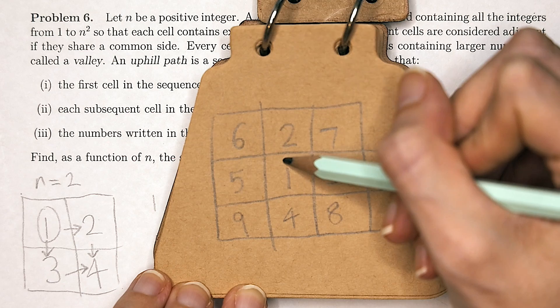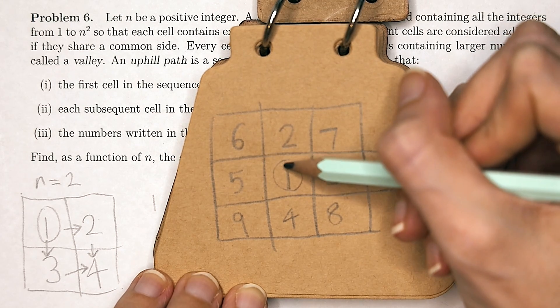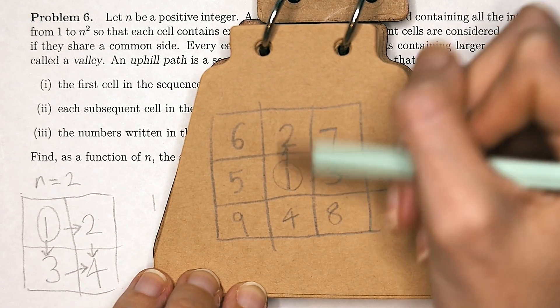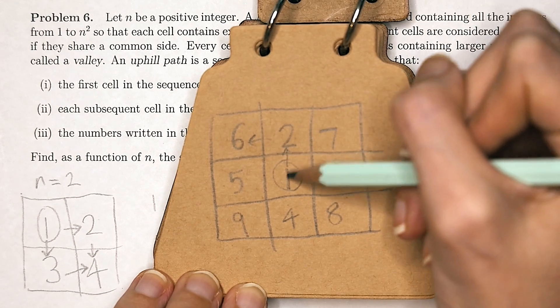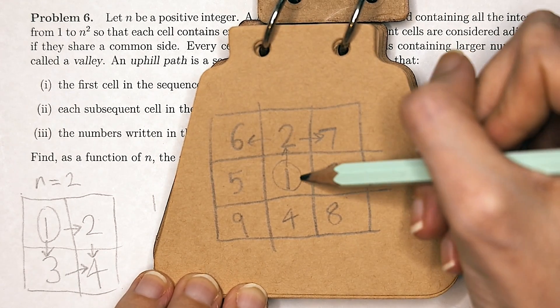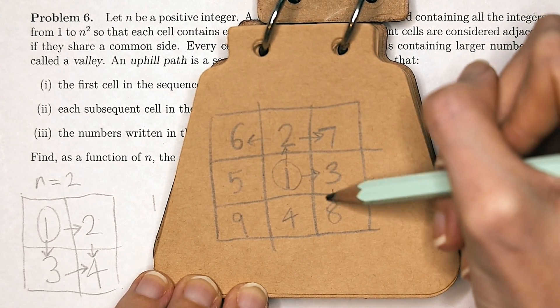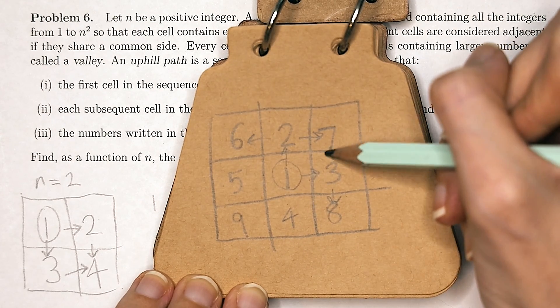Again, we only have one valley and it is our 1. But we could also have 1 2, 1 2 6, 1 2 7, 1 3, 1 3 8, 1 3 7.